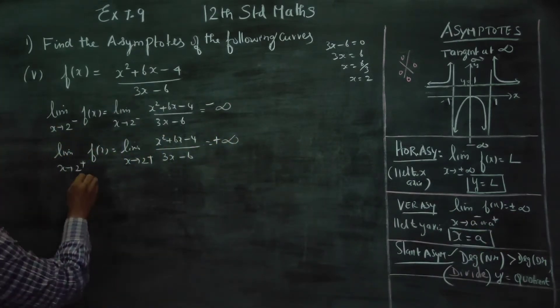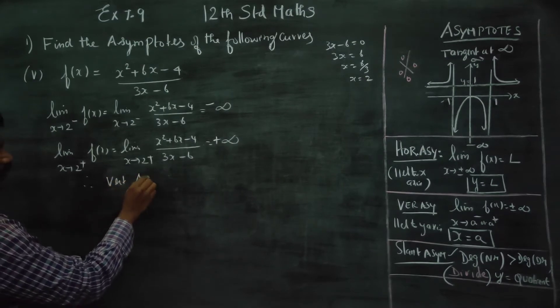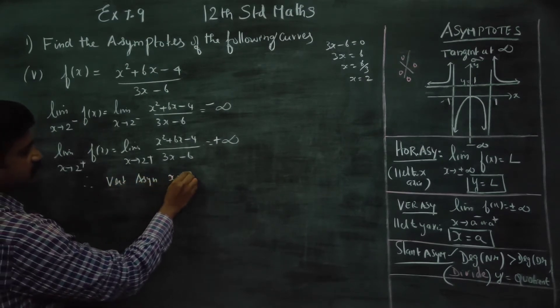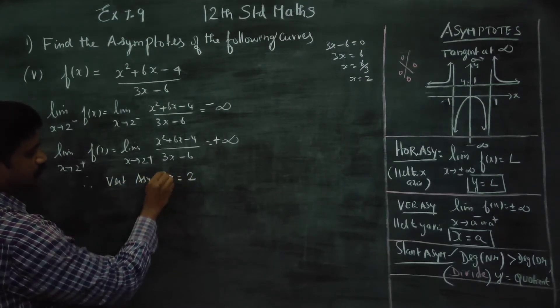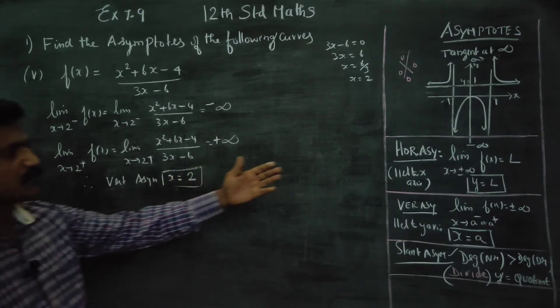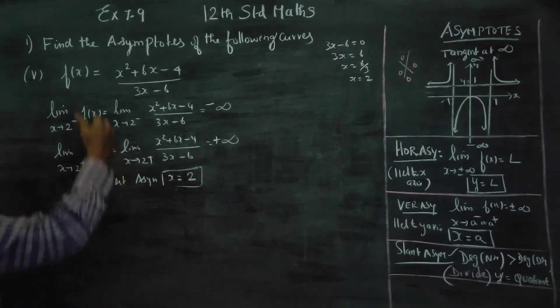Since the left-hand limit is minus infinity and right-hand limit is plus infinity, our vertical asymptote is x = 2. Now we check for horizontal asymptote.